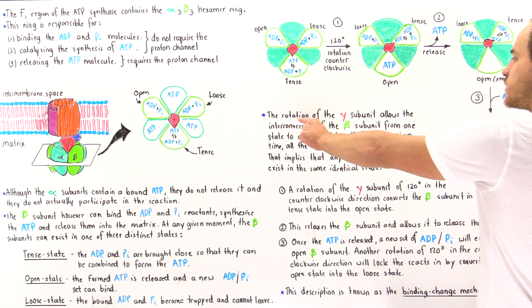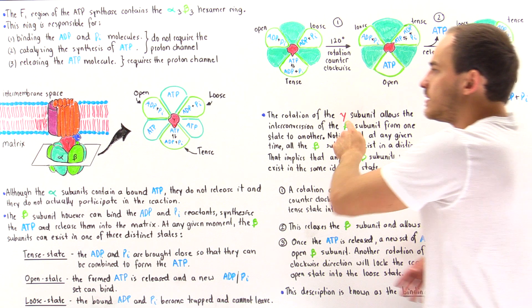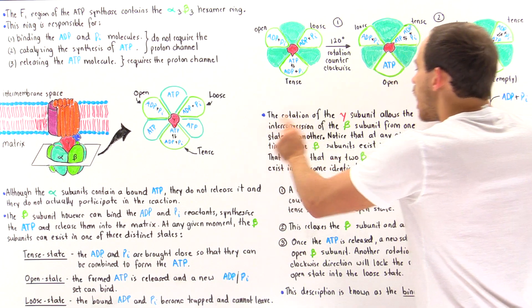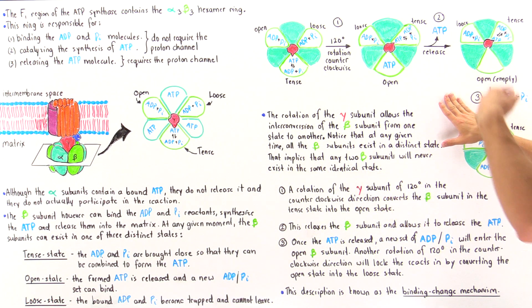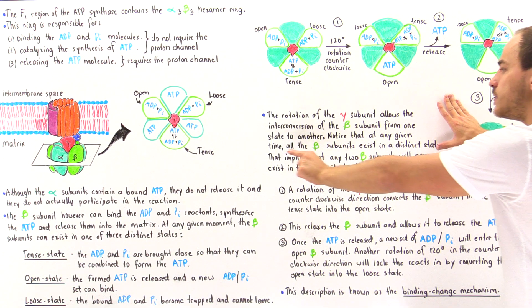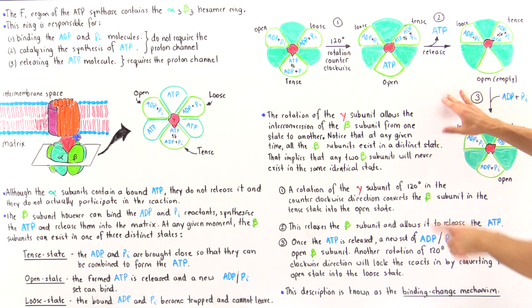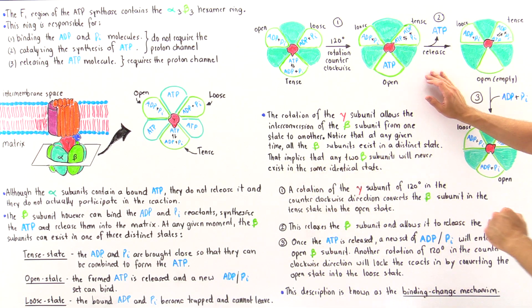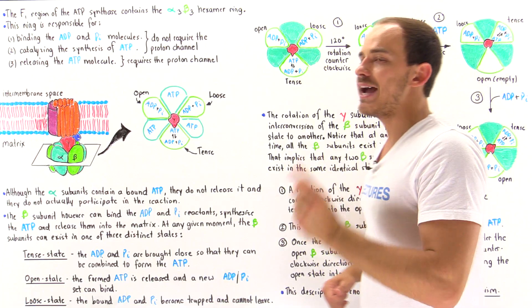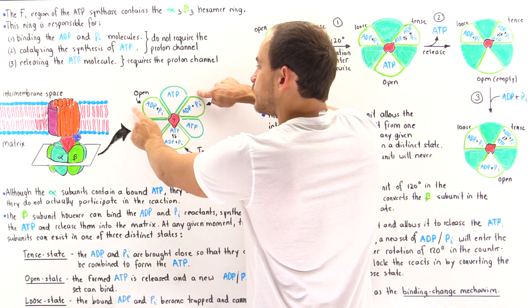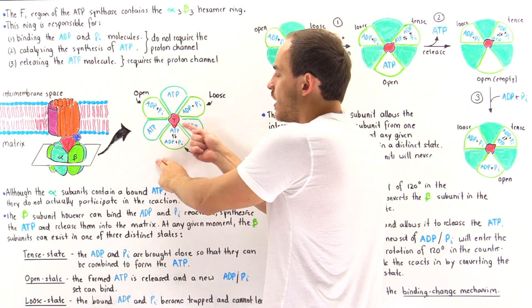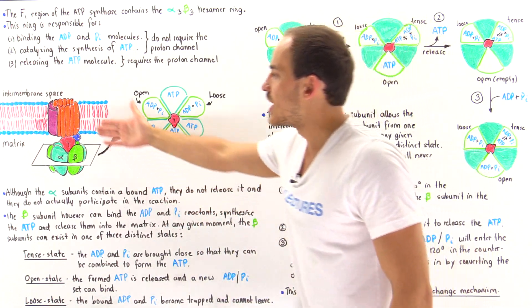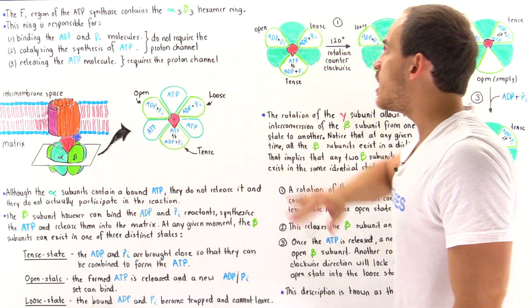The rotation of the gamma subunit within the inner cavity of the hexamer ring drives the interconversion of beta subunits from one state to another. At any given moment, all three beta subunits exist in distinct states — no two beta subunits are ever in the same identical state simultaneously. This is determined by the orientation of the central gamma structure within the hexamer ring.